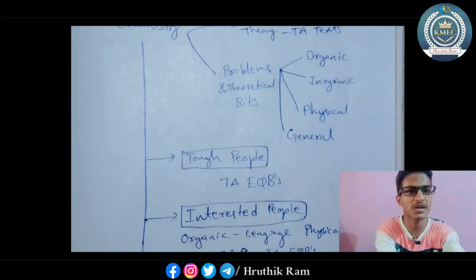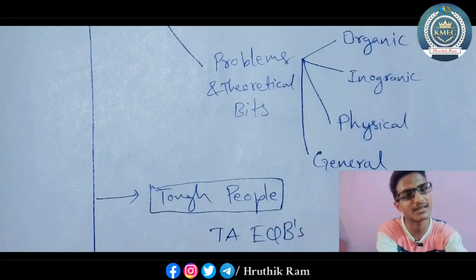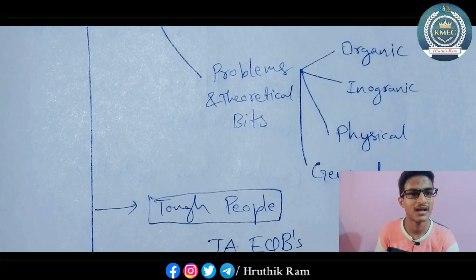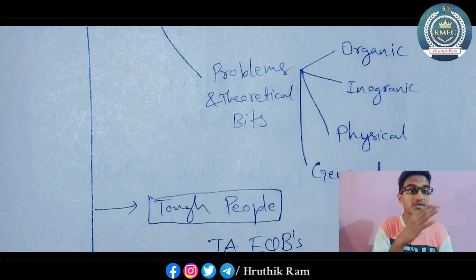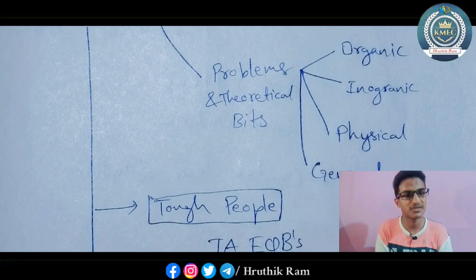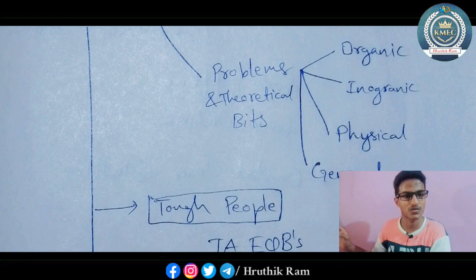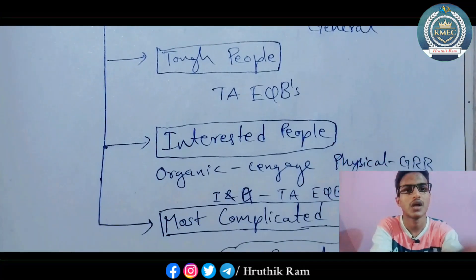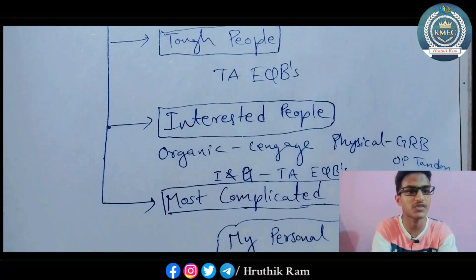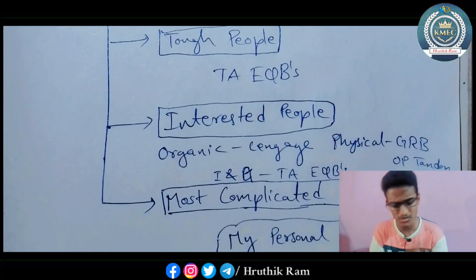Next, we'll talk about the problematic and theoretical bits in chemistry. Organic, inorganic, physical, and general — you can subdivide chemistry. Organic and inorganic are more theoretical, while physical chemistry is problematic. You can mix it up in general chemistry a little bit. Now, we'll talk about what subdivision you're looking at. You have to sort it out.